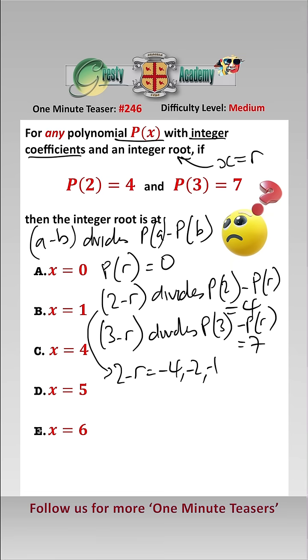either minus 4, minus 2, minus 1, 1, 2, or 4. And from this one we know that 3 minus r is equal to either minus 7, minus 1, 1, or 7. Therefore, from this one we know that r